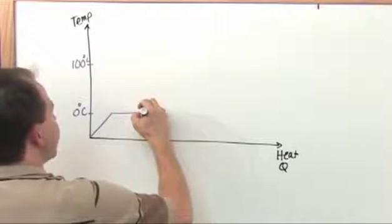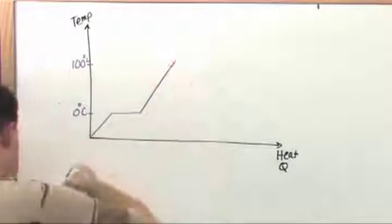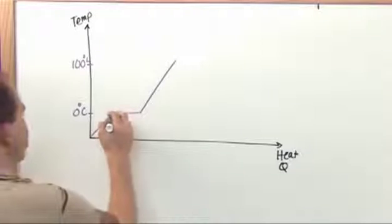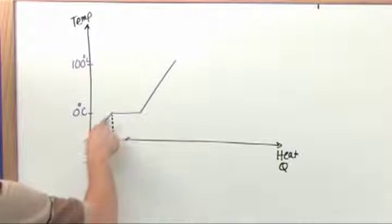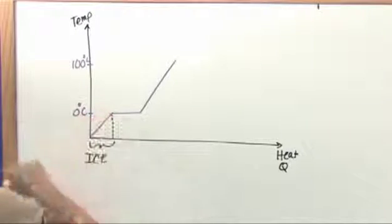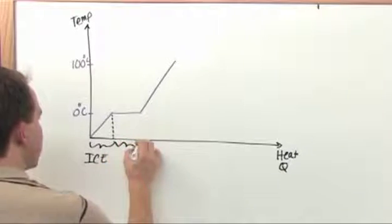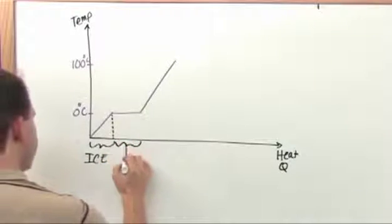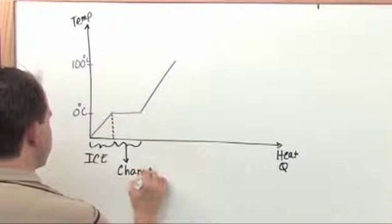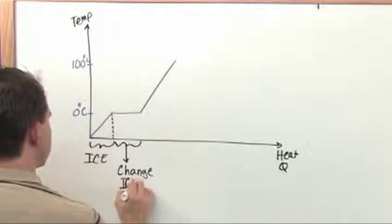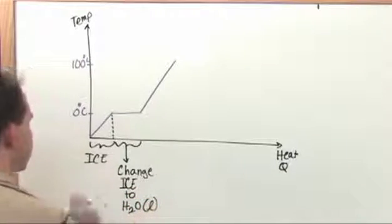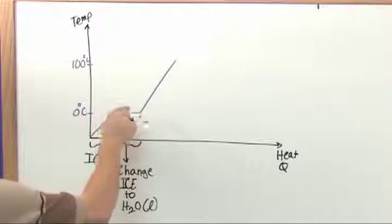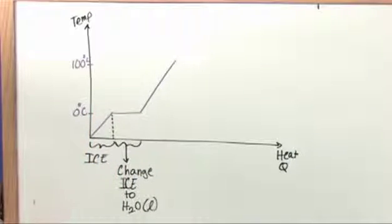And then the temperature is going to continue increasing because now you have liquid water. So just to make it totally clear, this region right here, you actually have ice and you're increasing the temperature of that block of ice until it reaches the melting point of ice. This region right here is when you change ice to liquid water. So this is the phase change. You're adding energy to it, but you're not increasing the temperature during the melting process. The energy is going into breaking those bonds down and pulling off the phase change.